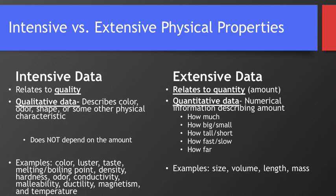So intensive relates to quality. Extensive relates to quantity. Quality or intensive describes color, odor, shape, some other physical characteristic that doesn't depend on the amount. I have put some more examples down here. You need to know these very well. Some of them include color, luster or shininess, taste, melting point, boiling point, density, hardness, odor or smell, how well it conducts electricity, malleability or how easily it is to be hammered down, ductility, how easy it is to be drawn into a wire, magnetism, temperature, things like that. They don't depend on how much you have.